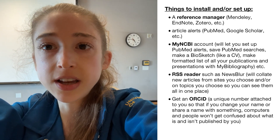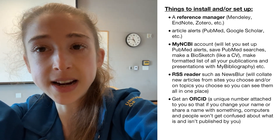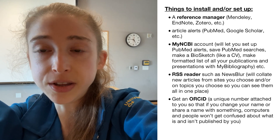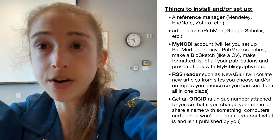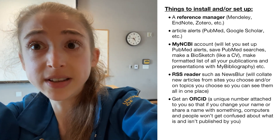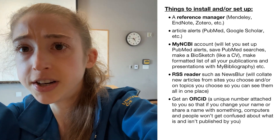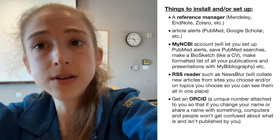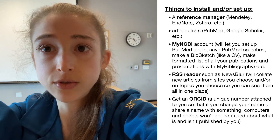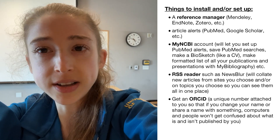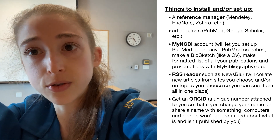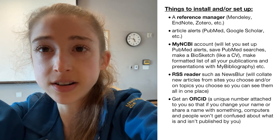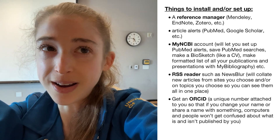Another important thing is to sign up for an ORCID. This is basically a number associated with you, so people aren't confused between researchers with the same name, like multiple Jane Does. If you get married and change your name, the ORCID travels with you and stays associated with all the work you do. You don't need to have any papers published to set it up — you can do it from the very start.